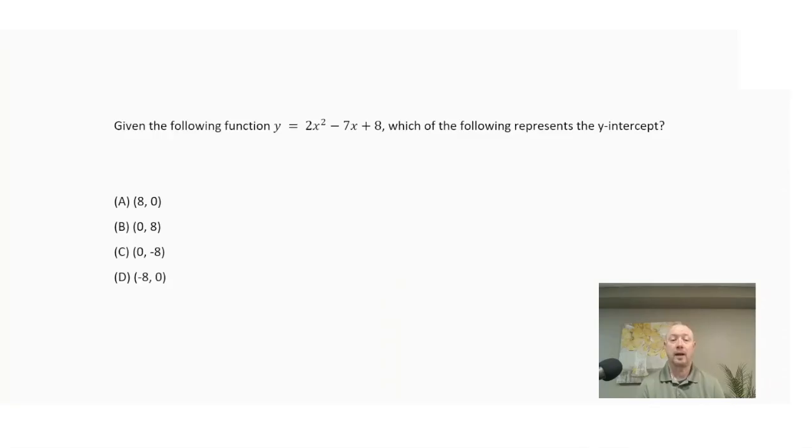Given the following function, y equals 2x squared minus 7x plus 8, which of the following represents the y-intercept? So in order to get the y-intercept, what we're going to do is plug in x equals zero into the function and figure out what the y value is. So that means that I could automatically eliminate choice A and choice D because those are x-intercepts.